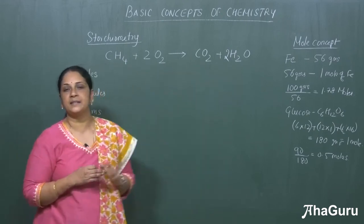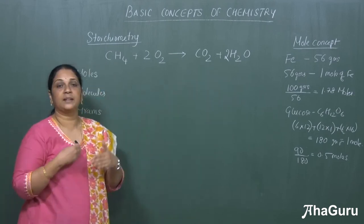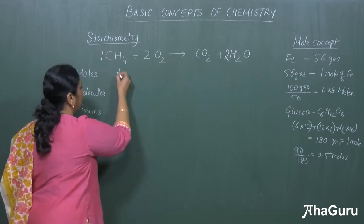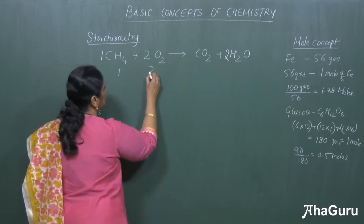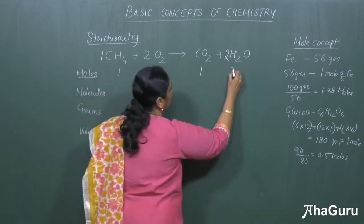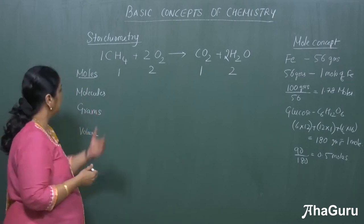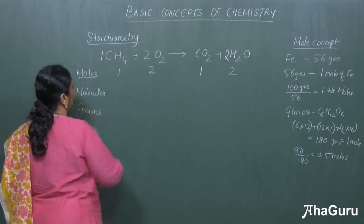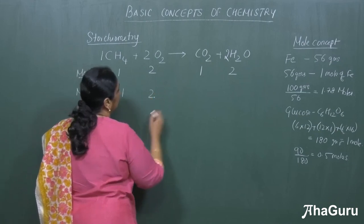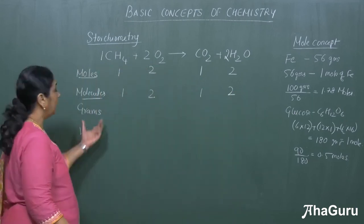We can express the balanced equation in terms of moles: one mole of methane reacts with two moles of oxygen to give one mole of carbon dioxide and two moles of water. In terms of molecules, it is exactly the same ratios: one molecule of methane reacts with two molecules of oxygen giving one molecule of carbon dioxide and two molecules of water.